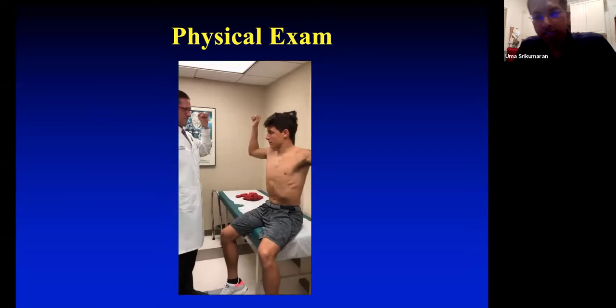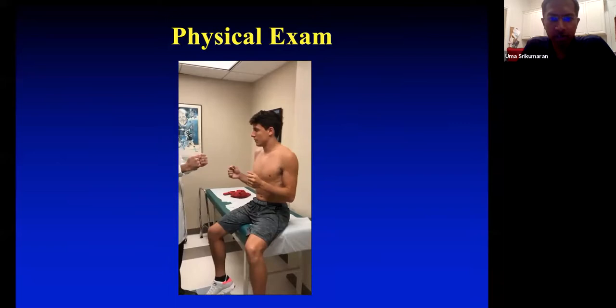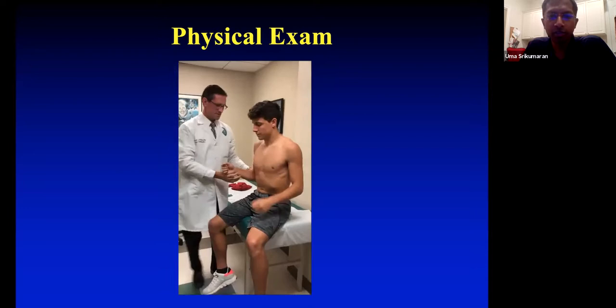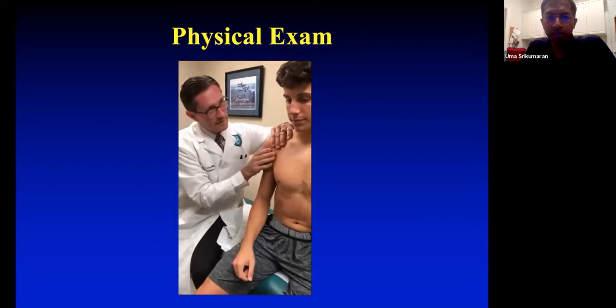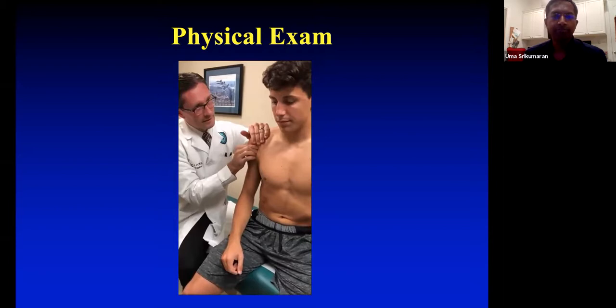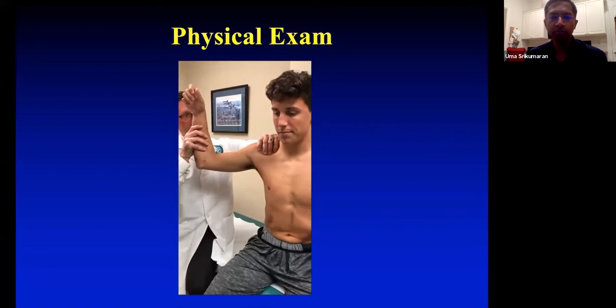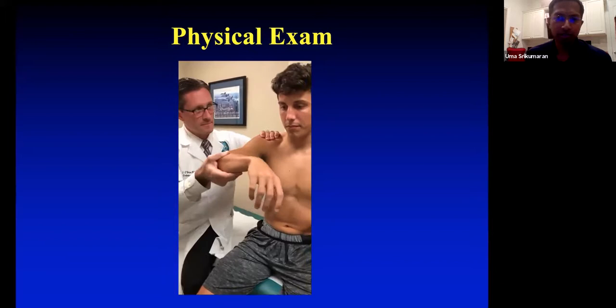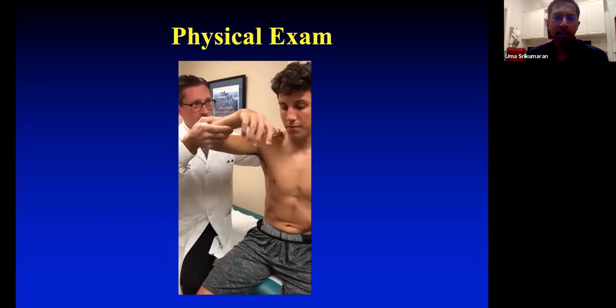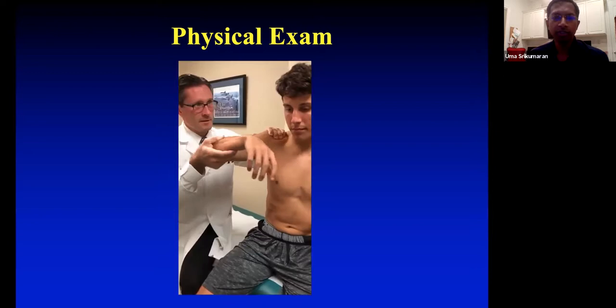Uma: standard stability assessment, evaluating both sides so you can compare symmetry, establishing any history of hyperlaxity or multidirectional instability to understand how this fits into their general baseline. Inspection and palpation for tenderness, range of motion starting lower where they're more comfortable, then extending into more provocative maneuvers — apprehension and relocation, usually done lying down but can be performed seated as well. You can directly establish this particular diagnosis with your exam, but generally follow a standard instability exam.